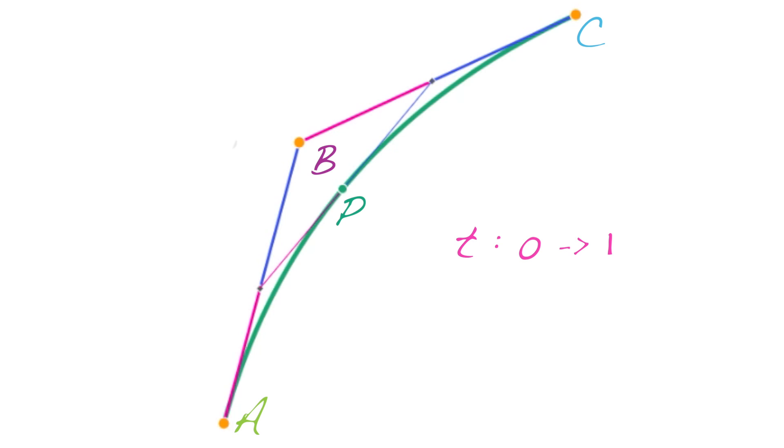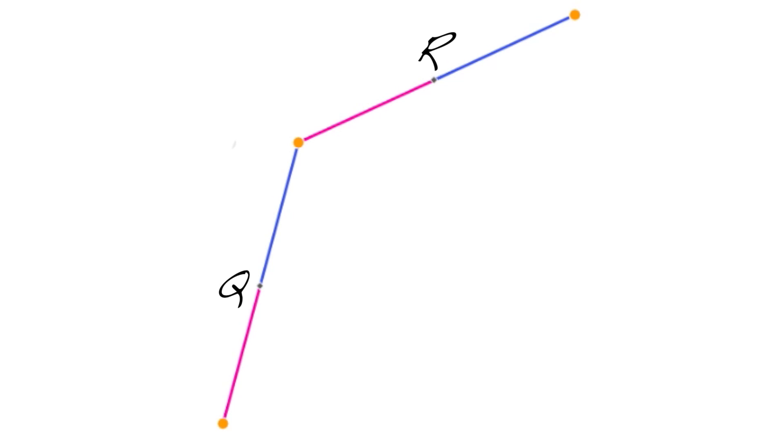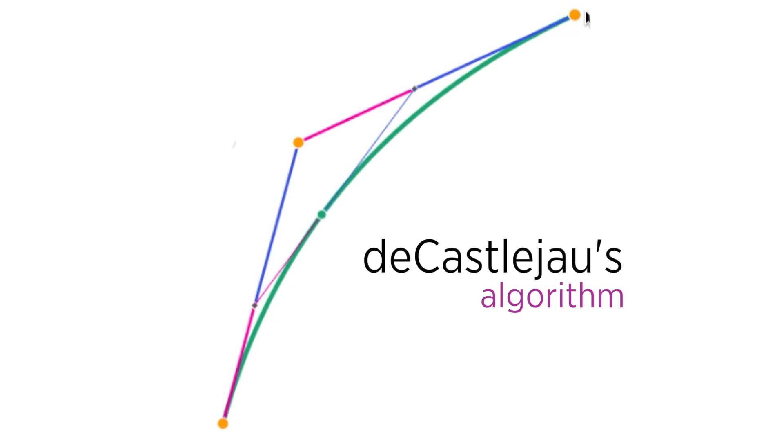You can think of this construction method as repeated linear interpolation, since Q, R, and P are all computed using linear functions of T. This method of repeated linear interpolation is called DeCasteljau's algorithm. It's named after Paul DeCasteljau, who actually discovered the math for this a few years before Pierre Bézier, but wasn't able to publish it until after Bézier had scooped him.